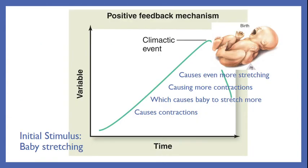Here's that on a graph. That stimulus is increasing — the contractions, the stretching — the variable just keeps going up. Compare this to the set point with negative feedback in your air conditioning, where we just go up and down. There's no time for that here. We are in a positive feedback loop that just builds on itself until finally something happens — in this case, birth.